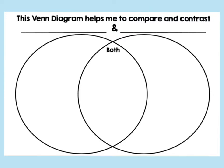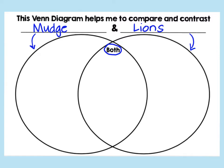I'm going to choose one animal from our informational text, All in the Family, to compare and contrast to Mudge. You can write the same animal that I do, or you can listen and then choose a different animal to compare and contrast on your own. I'm going to compare and contrast Mudge and Lions. On this side of the Venn diagram I'll put information about Mudge that's different from Lions. On this side, information about Lions that's different from Mudge. In the middle, what's similar about them.